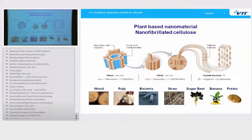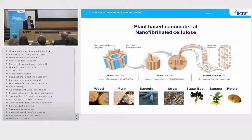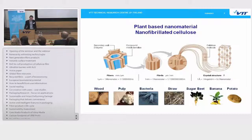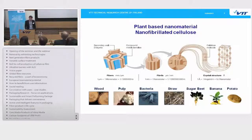Nanocellulose can be made from various plant-based materials. We are using birch-based pulp, but there could also be other sources such as straw and other plant-based materials. If you look at the picture above, you will see a schematic of a fiber wall. The fiber wall consists of fibrils, and what we are doing is using mechanical force to break down the fibers and fiber walls to a fibril level.